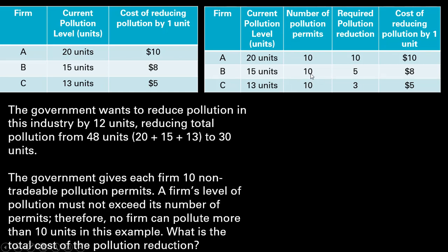This is what's going on now. We have each firm's current level of pollution, and each firm has 10 pollution permits — no firm can pollute more than the number of permits it is currently holding. Firm A is polluting 20 units and has 10 permits, so 20 minus 10 gives a required reduction of 10 units. Firm B is currently polluting 15 units with 10 permits, so it has to reduce pollution by 5 units. And finally, firm C has to reduce pollution by 3 units.